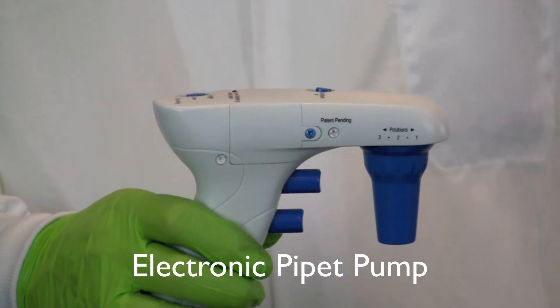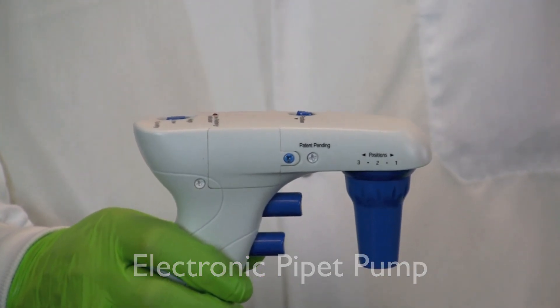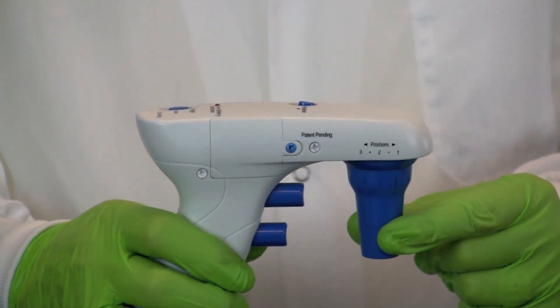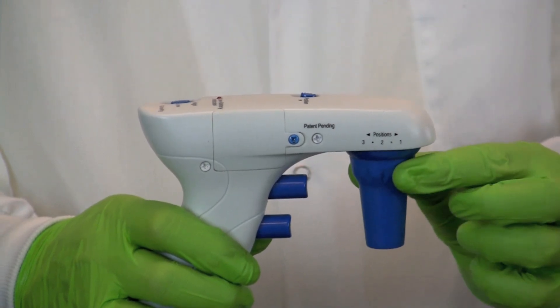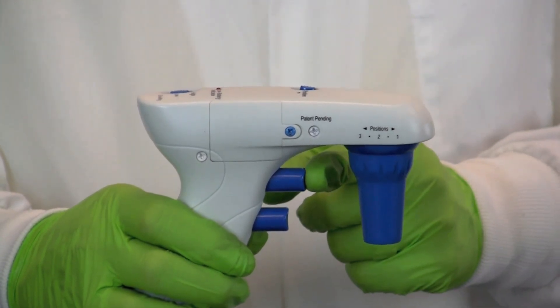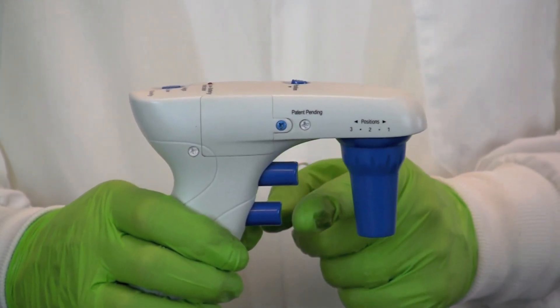The parts of an electronic pipette pump include the gasket that connects to the pipette, a filter that prevents any contaminants from getting into the pump, a suction button, and an exhaust button.